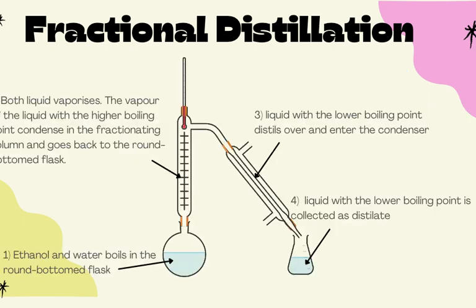This diagram shows the fractional distillation setup. The biggest difference is the presence of a fractionating column. The mixture is boiled in a round-bottom flask, and both liquids evaporate at the same time. However, the vapor with the higher boiling point condenses in the fractionating column and returns to the flask. When the boiling point of the liquid with the lower boiling point is reached, it is distilled over and collected as the distillate.